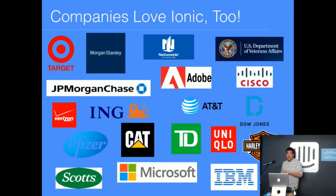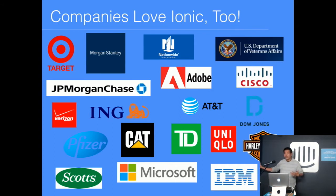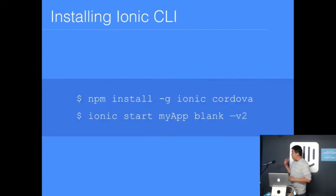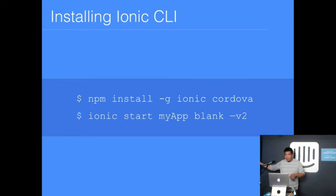Both Ionic 1 and Ionic 2 have been used extensively for both internal and external apps by really major companies. I show this just to give you the sense that the framework is very mature and used at enterprise scale. If you're interested in trying it out: npm install Ionic, and also Cordova if you want to do any bundling and deploying. Then the command 'ionic start' will scaffold a basic skeleton app for you.